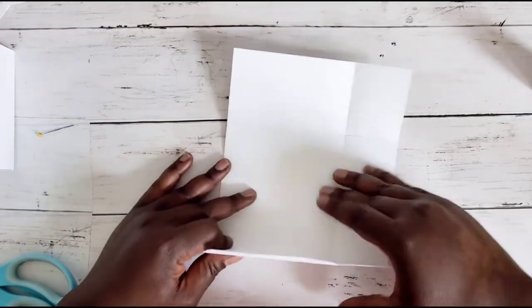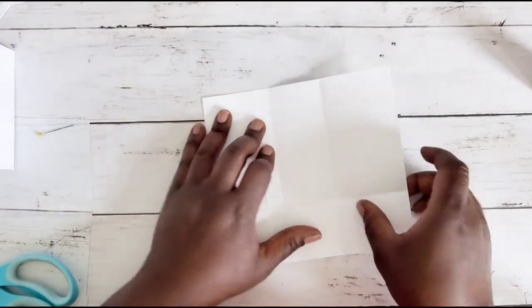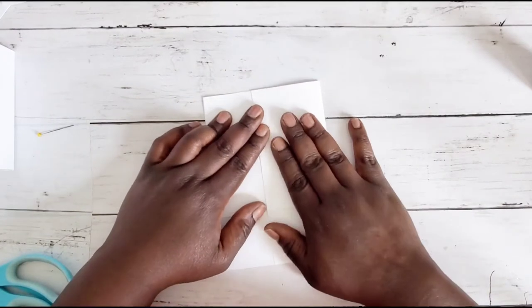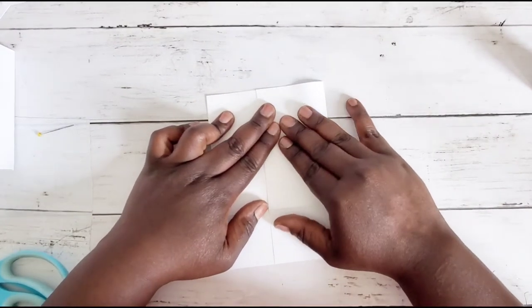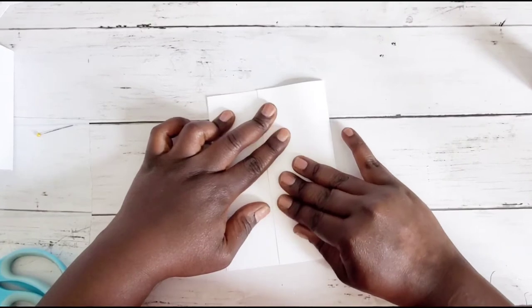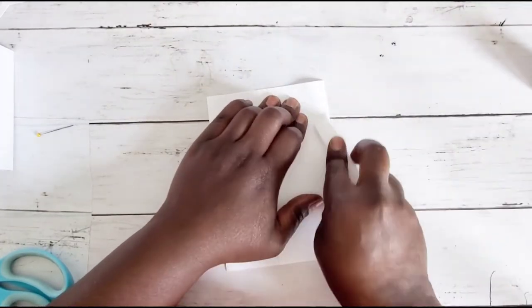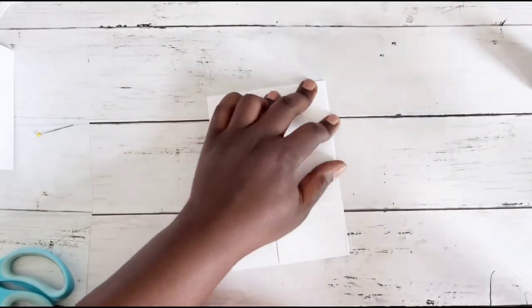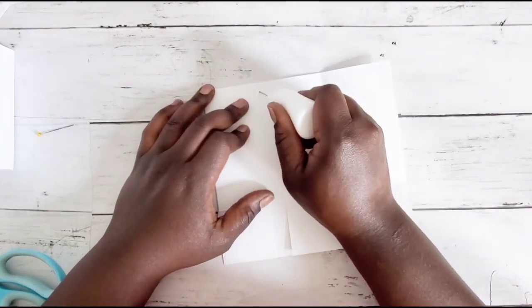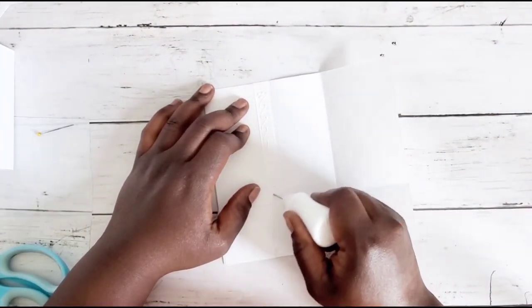Okay, so now I'm going to fold my tab over that way. It just makes it a lot easier to adhere it together. Might have to adjust that a little bit, there we go. So I'm going to add my glue to my little tab.